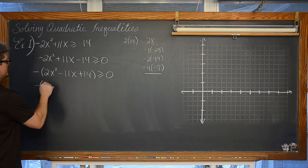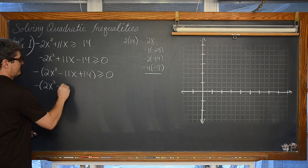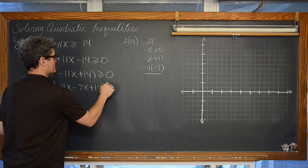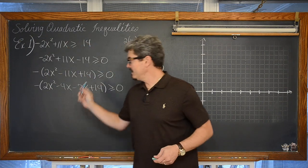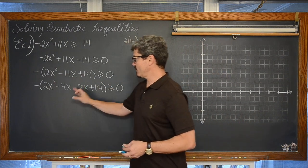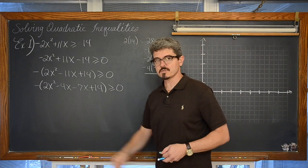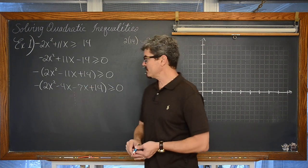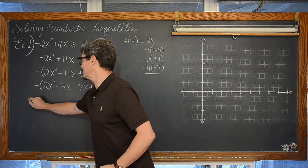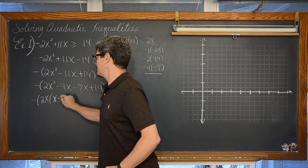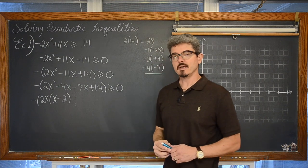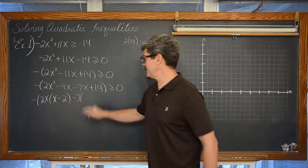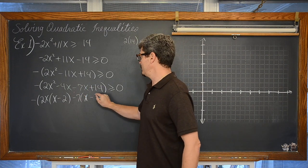So we have negative parenthesis 2x squared minus 4x minus 7x plus 14 is greater than or equal to 0. Now that we have our quadratic written with 4 terms, we are going to factor by grouping. We are going to look at what we can take out of our first two terms. These both have a common factor of 2x. So we are looking at 2x times x minus 2. We are going to factor out a negative 7. Negative 7x divided by negative 7 is x, and 14 divided by negative 7 is equal to negative 2.